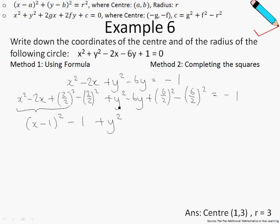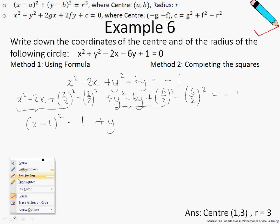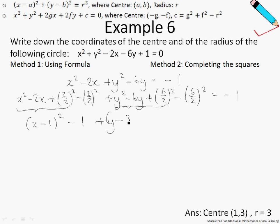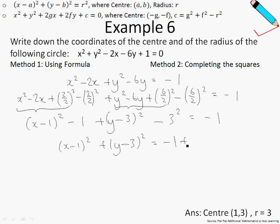Now let's evaluate the terms for y. The first three terms for y can be written as y squared minus 6y plus (6/2) squared minus (6/2) squared, which gives us (y minus 3) squared. And this remaining term is just minus 3 squared, which gives negative 9. I will leave the two squared terms on the left-hand side, and shift the negative 1 and the negative 3 squared over to the right-hand side.